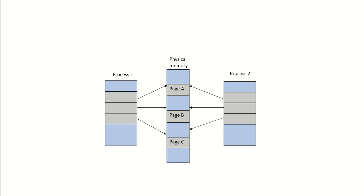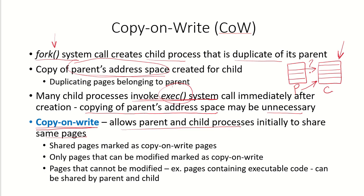Copy-on-Write allows the parent and child processes to initially share the same pages. If parent process P1 has pages A, B, and C, those same pages can be used by the child process P2. The child process will have access to the same pages rather than creating new ones, so no duplicate copies are created initially.